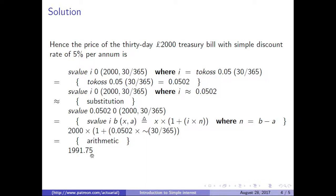So if we want to buy a 30-day, £2000 treasury bill with simple discount of 5% per year, then we should pay £1991.78.